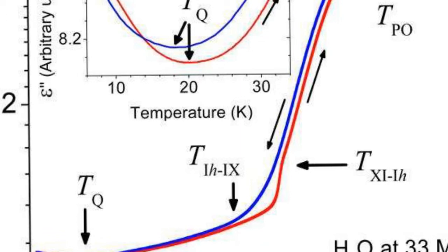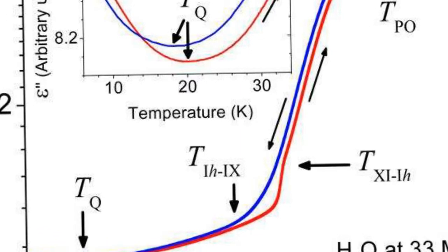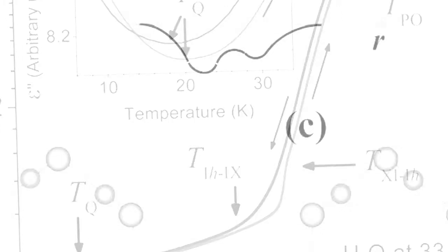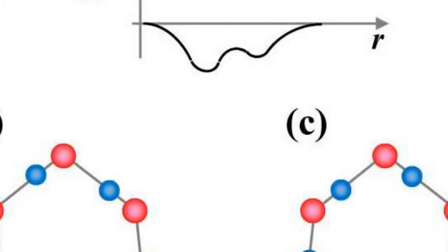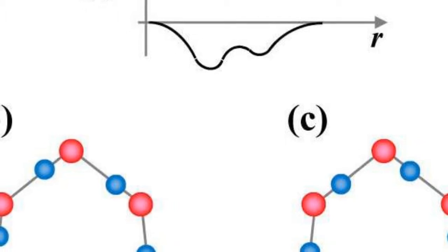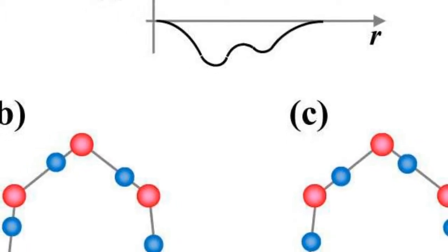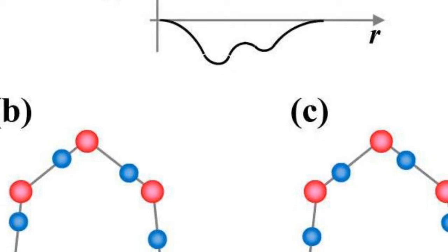At high enough temperatures, above 136 K, the protons have enough energy to move between the sites. However, when the temperature falls below 136 K, the protons no longer have enough energy to move between sites and randomly freeze in one of the sites.